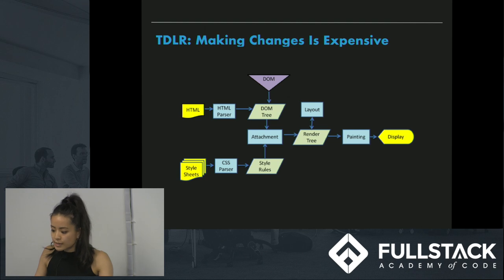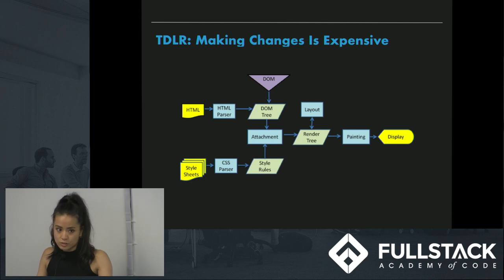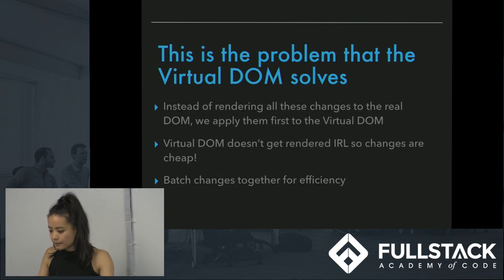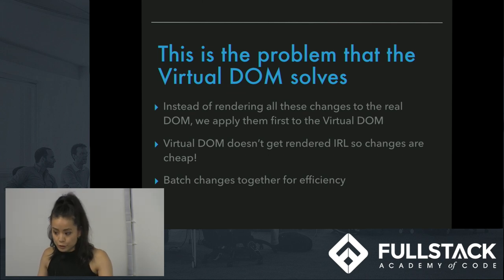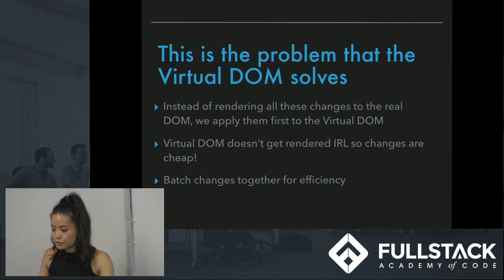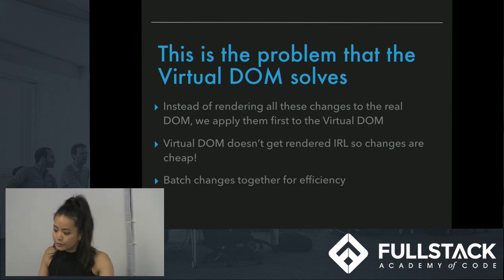When there's a change in state, the browser needs to consider things like what parts of the tree to re-render and whether to re-render large sections or just the parts that need it. This is the problem that the virtual DOM solves. Instead of rendering all these changes to the real DOM, we apply them first to the virtual DOM, which doesn't get rendered in real life, so changes to it are really cheap. You can think of it as editing a blueprint rather than rebuilding the whole building.